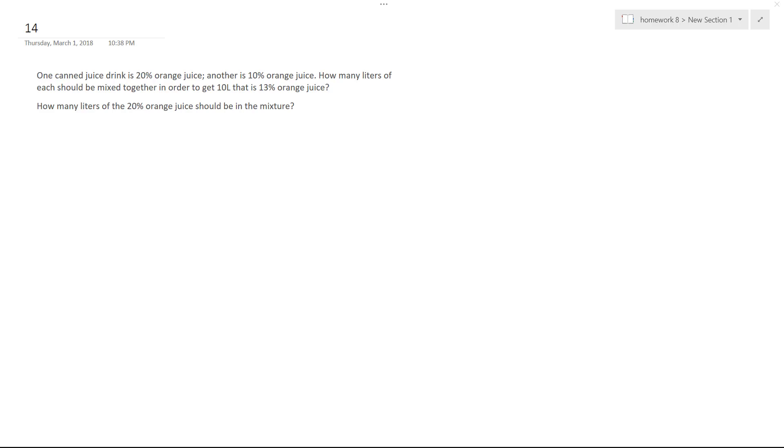All right, so solving this problem. We have canned juice drink, 20% juice, and then 10% juice drink. And we want to mix them together so we get 10 liters of a 13% orange juice solution.